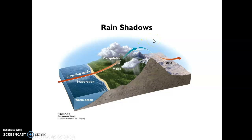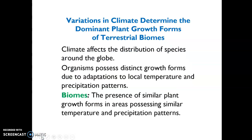Now we're looking at what forms terrestrial biomes. It's variation in climate — which means temperature and precipitation — that determines the dominant plant growth forms, and therefore all of the other organisms in the biome. Climate affects the distribution of species around the globe, and organisms have distinct growth forms due to adaptations to local temperature and precipitation patterns.